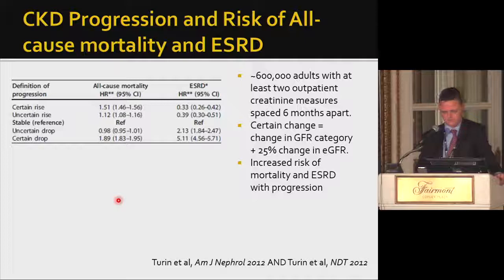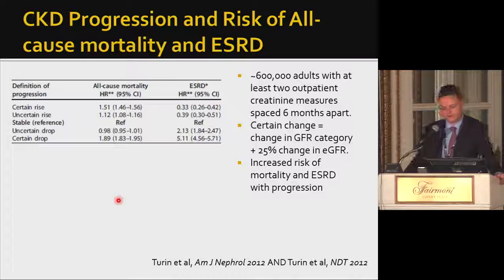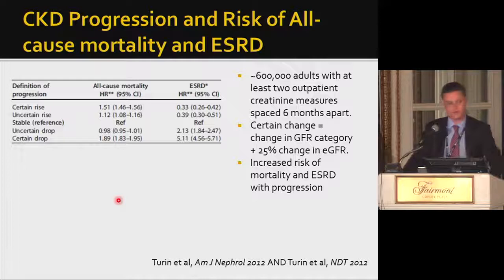We need to know if CKD progression affects hard outcomes. A Canadian registry study of 600,000 individuals found that those with a confirmed GFR category drop and 25% GFR decline had a two-fold increase in all-cause mortality and a five-fold increase in the risk of end-stage renal disease. So CKD progression is bad.